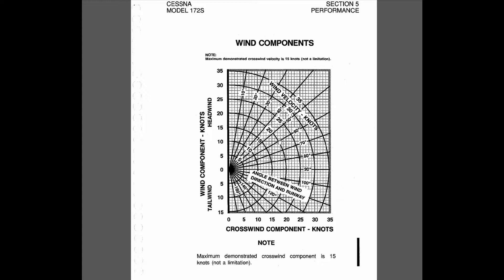Now turn that around and consider 60 degrees. Say we're on runway 16, aligned roughly 160 magnetic, and the wind is from 100 — about a 60-degree angular difference — still at 20-knot total velocity. Only half of it is now acting as a headwind, but almost all of it acts as a crosswind. You can remember this as the 30-60 rule: at 30 degrees, almost all of the wind is headwind and only half is crosswind; at 60 degrees it flips the other way around.